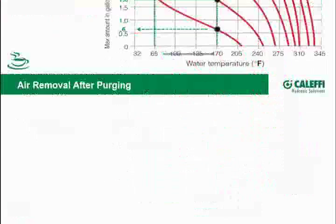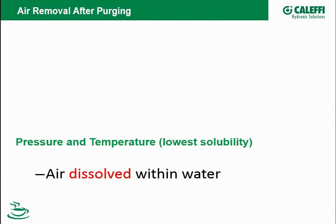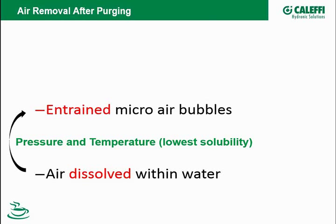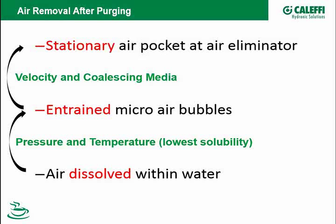How do we find that location? We have water with dissolved air in it. First, look at how to find my lowest solubility point — it's about pressure and temperature. If I choose the right combination, my dissolved air becomes entrained micro air bubbles. Once I have those micro air bubbles, they're small and subjected to all the velocity and dynamics — very hard to separate. So I have to have a way to get the bubbles to a format where they will make their way up to an air vent. We use velocity and a coalescing media to change small entrained micro bubbles to a stationary air pocket within my air eliminator. Once I have a stationary air pocket, I can get rid of the air with an air vent.